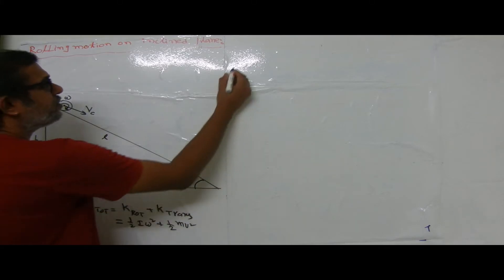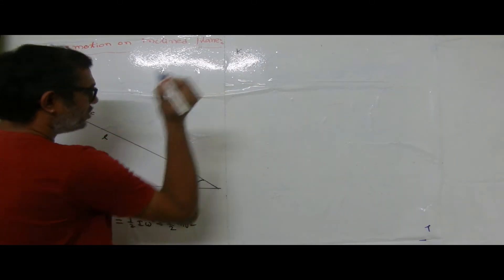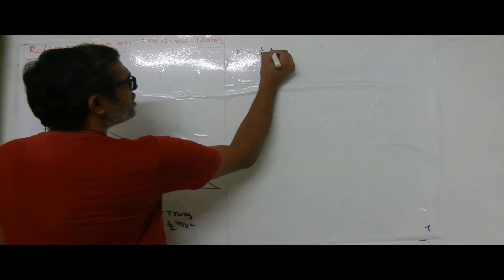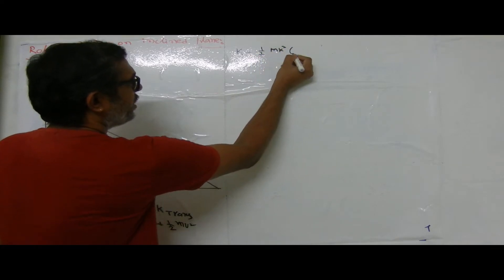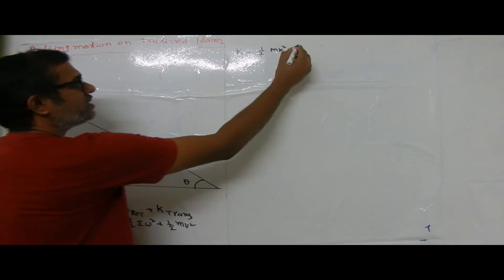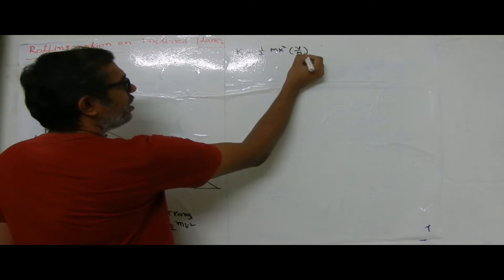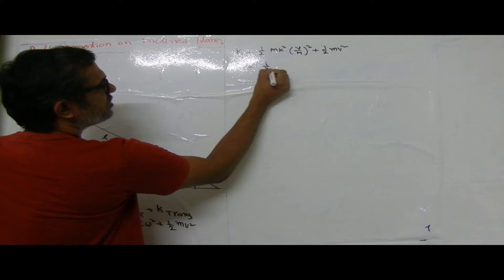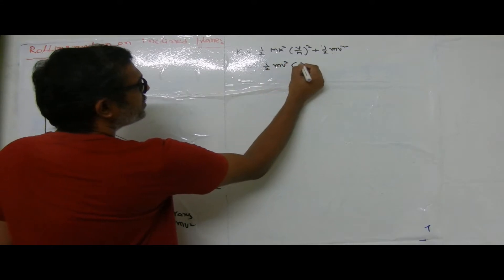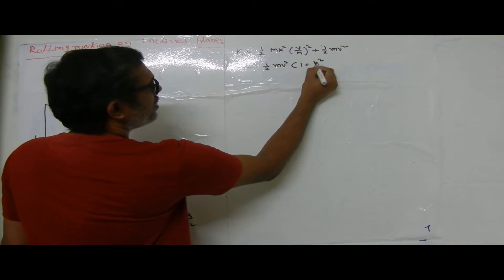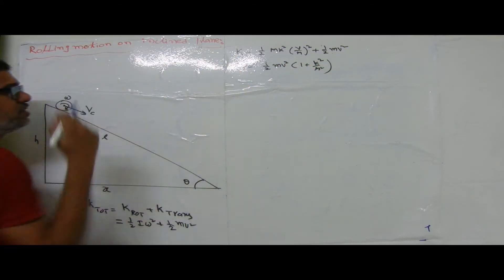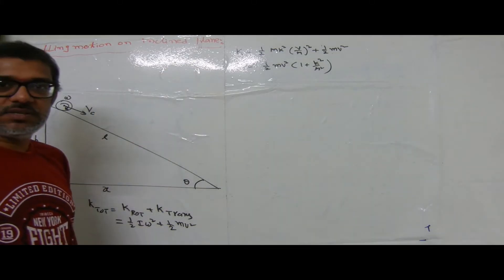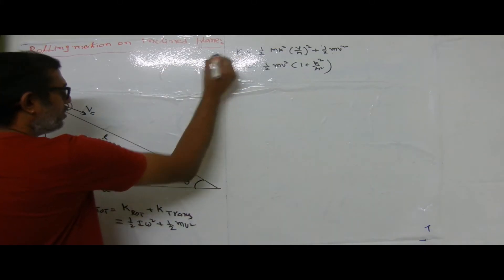Total kinetic energy K equals half times I (written as mk²) times (v/r)² plus half mv squared. Simplifying, we get K equals half mv² times (1 + k²/r²). This is the first key equation for the kinetic energy of the rolling system.